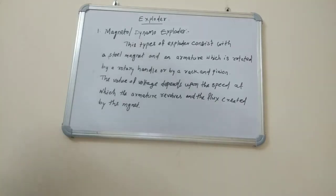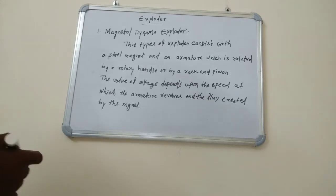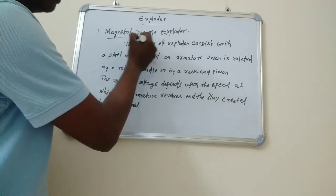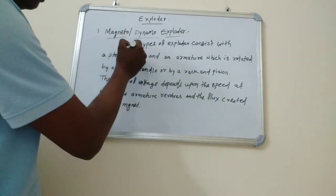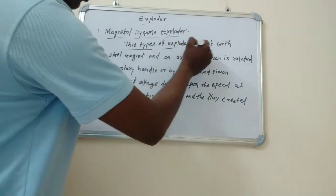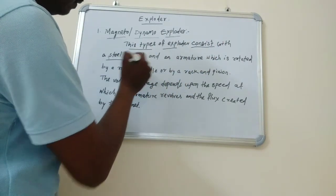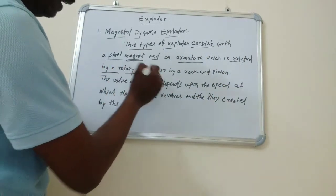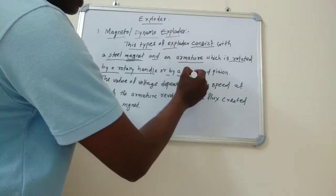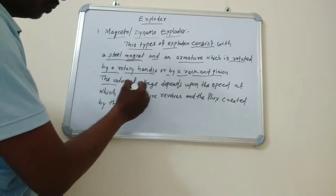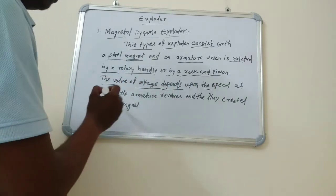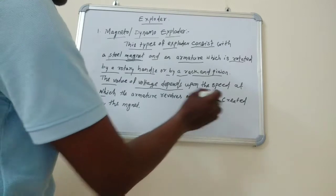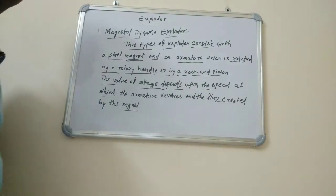Let's talk about magneto or dynamo exploders. These types of exploders consist of a steel magnet and an armature which is rotated by a rotary handle or by a rack and pinion. The value of voltage depends upon the speed at which the armature revolves and the flux created by the magnet.